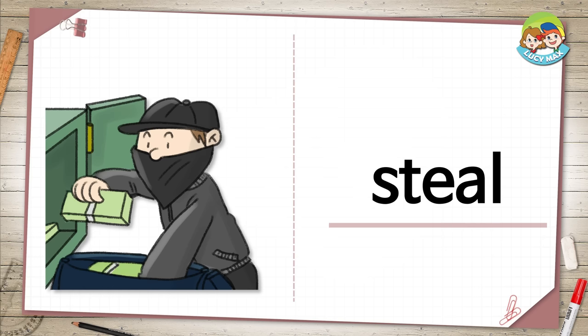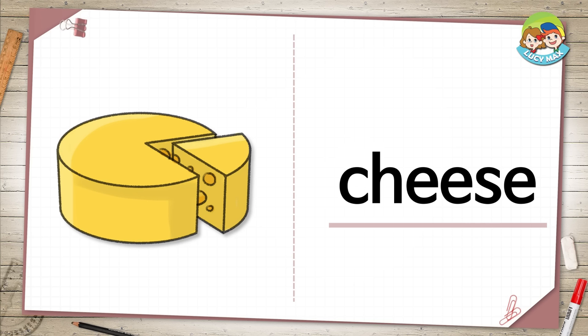Cheese. This is a food that comes from milk. It is usually yellow or white. You can put it on pizza. What other thing can you put cheese on?